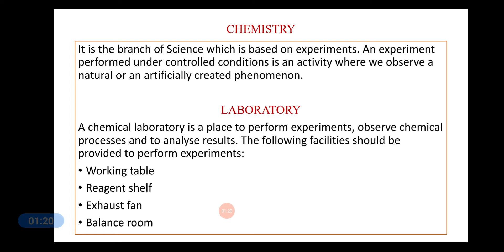A chemical laboratory is a place to perform experiments, observe chemical processes, and to analyze results. The following facilities should be provided to perform experiments: a working table, the reagent shelf, the exhaust fan, and the balance room. All these four things must be present so that experiments can be done properly.